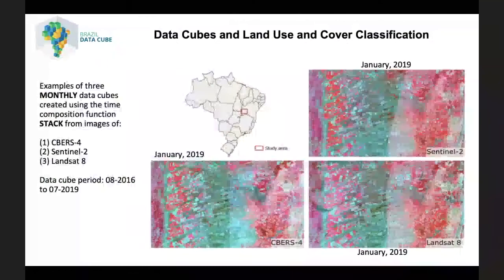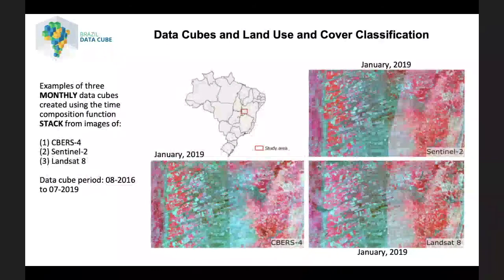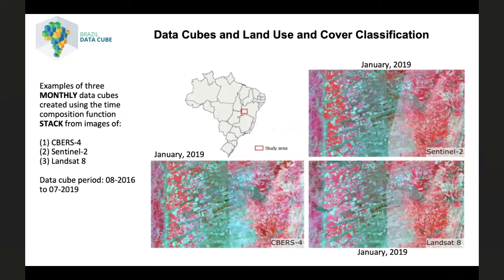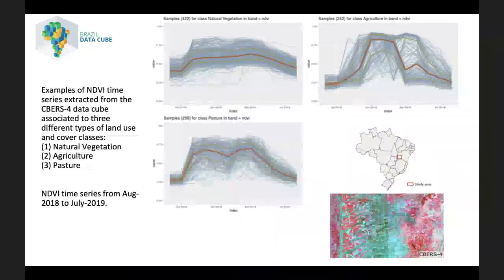This picture shows examples of three monthly data cubes created using the time composition function stack, from images of the satellites CBERS-4, CBERS-4 AWFI, and Landsat 8. These data cubes were created for three years in the Brazil DataCube project, from 2016 to 2019, and are available in our web portal. Here we can see examples of NDVI time series of one agriculture year, from 2018 to 2019, extracted from the CBERS-4 data cube associated to three different types of land use and cover classes.